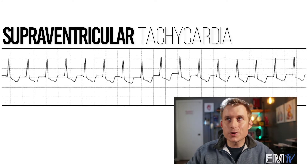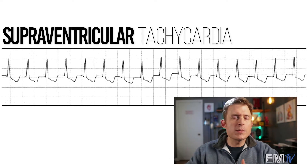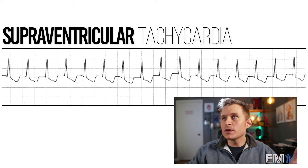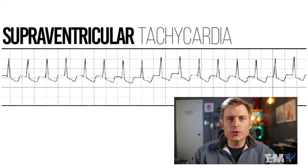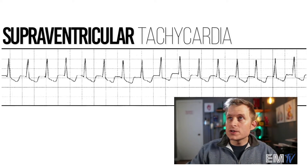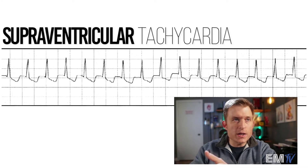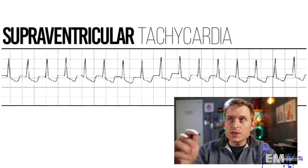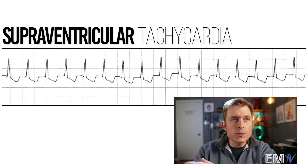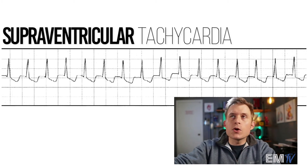If it didn't have a consistent R to R interval, I could make a case that this is rapid AFib. If the QRS complex was very wide, I could call it VTAC, or even SVT with aberrancy — but I don't have a 12-lead to tell if this is a person with a bundle branch block who's now in SVT. It's also important to note the difference between a sinus tach at this rate and an SVT: in sinus tach, even at this speed, you can still see a difference between the P wave and T wave. In SVT, those lines blur together and it looks like one large wave. So again, I would call this SVT.